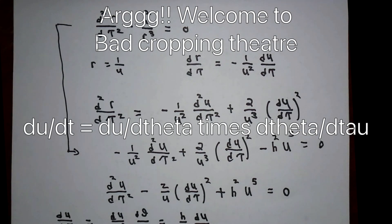Because d theta d tau is h over r squared, if I apply the chain rule, I found out that du d tau is the same as h over r squared du d theta. I'll take this expression and put it in here. Also, I need to know the second derivative.